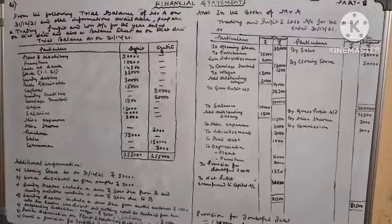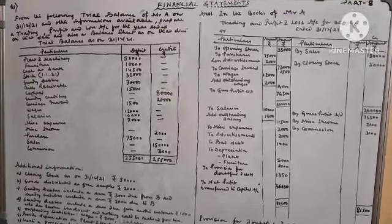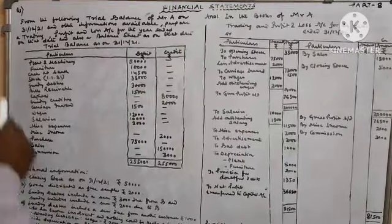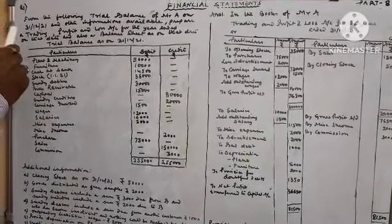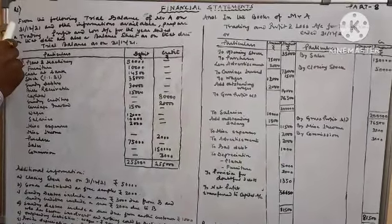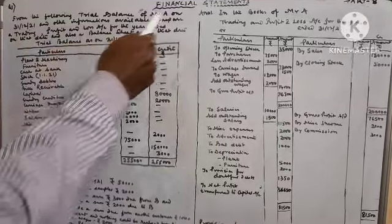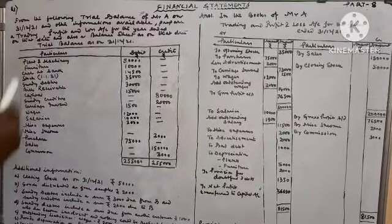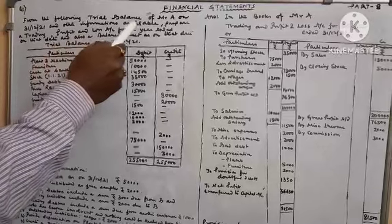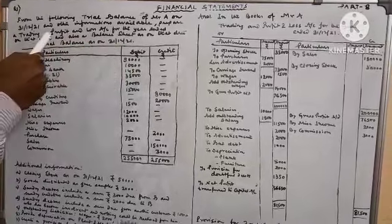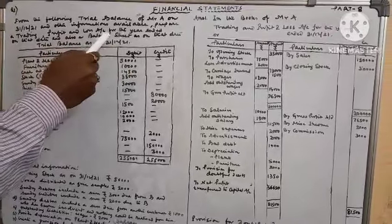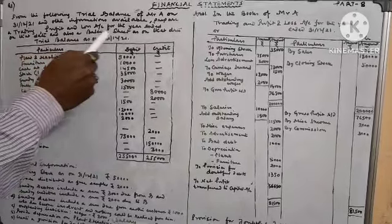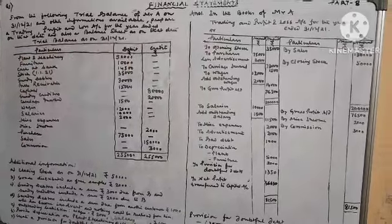Hello students, welcome to my channel KT's Commerce Classes. Today again financial statement part 8. One question has been given: from the following trial balance of Mr. A on 31st December 2021 and other information available, prepare a trading profit and loss account for the year ended on that date and also a balance sheet as on that date.